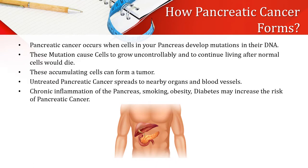How does pancreatic cancer form? Pancreatic cancer occurs when cells in the pancreas develop mutations in their DNA. These mutations cause cells to grow uncontrollably and to continue living after normal cells would die. These accumulating cells can form a tumor. Untreated, pancreatic cancer spreads to nearby organs and blood vessels. Chronic inflammation of the pancreas, smoking, obesity, and diabetes may increase the risk of pancreatic cancer.